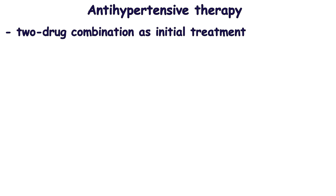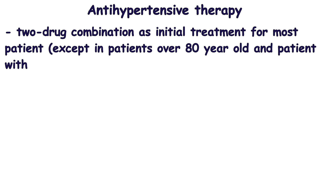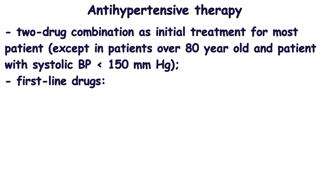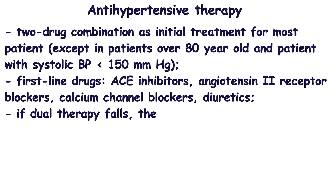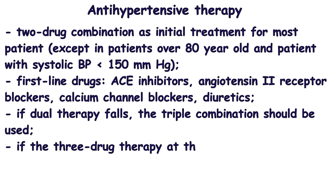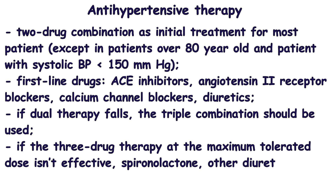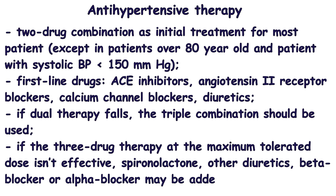An initial two-drug combination is preferred for most patients. The dual combination should include ACE inhibitors, angiotensin receptor blockers, calcium channel blockers, or a diuretic. Combining ACE inhibitors and angiotensin receptor blockers may be harmful due to the risk of hyperkalemia and renal failure. If dual therapy fails, a triple combination should be used. If three-drug therapy at maximum tolerated dose is ineffective, spironolactone, other diuretics, beta blockers, or alpha blockers may be added.